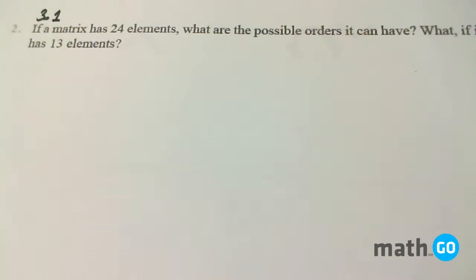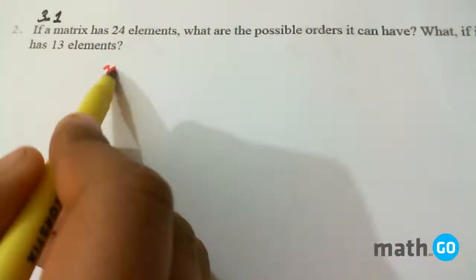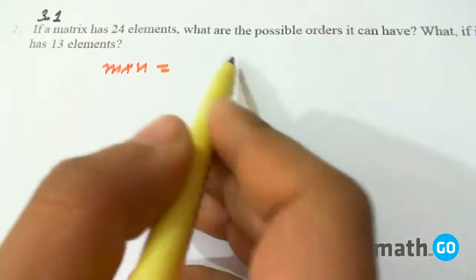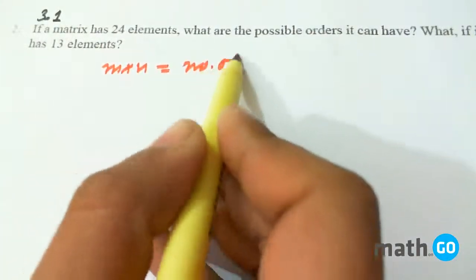So, we know that if we have the order to be m cross n, then this is simply the number of elements in the matrix.